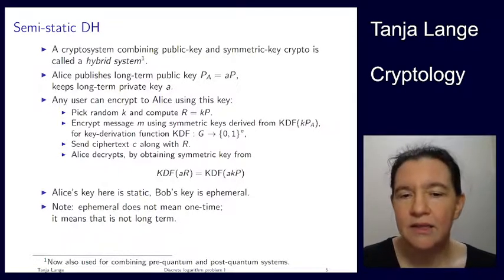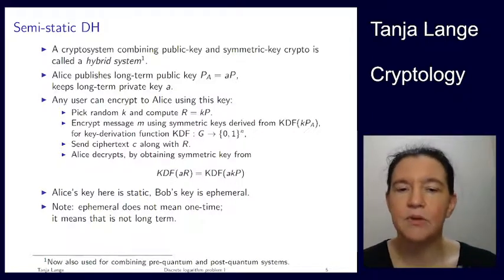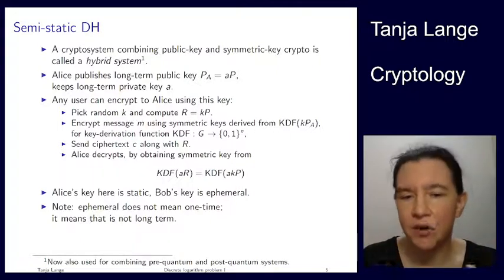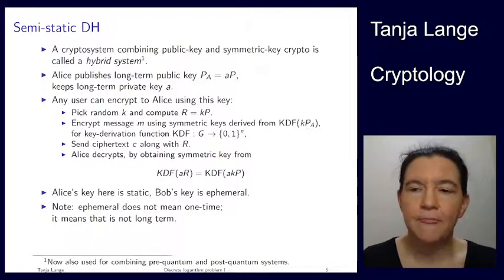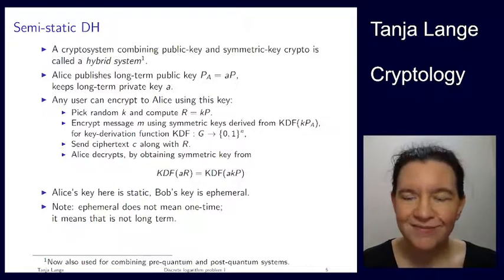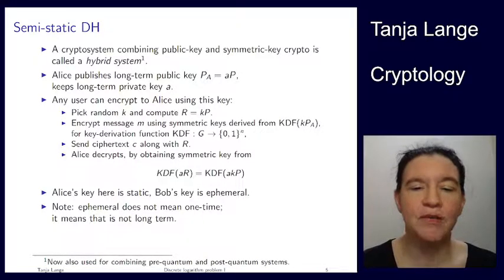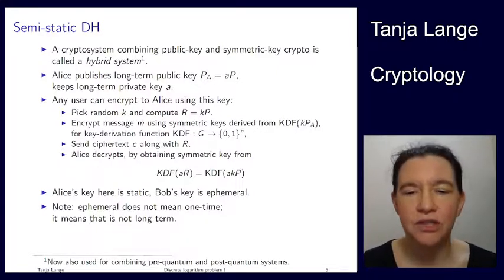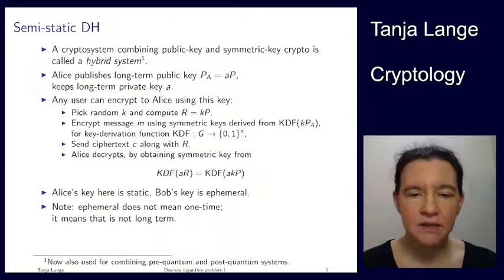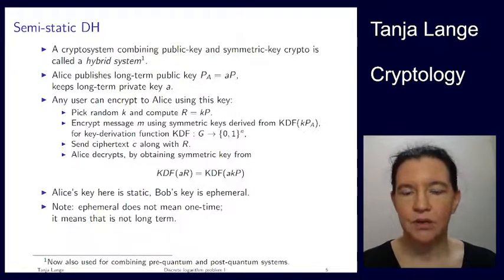Alice's key here is static — it's a long-term key. Bob's key is what we call ephemeral: short-term, or there and then gone. Ephemeral just means something that is not permanent. Some people use ephemeral to mean one-time, but it's not the same word. One-time really means one-time. Ephemeral can be more gentle — you can have situations where ephemeral keys stick around for a bit longer. So don't rely on it being gone after one use.